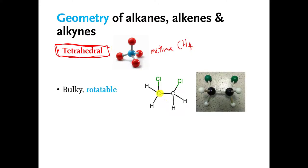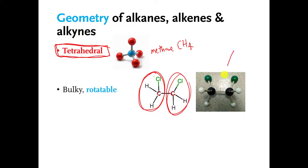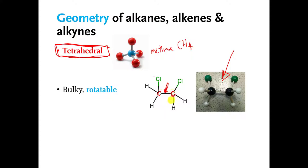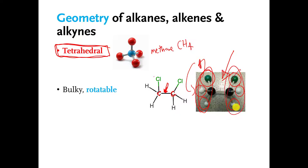If you have two carbons connected to each other, and there are three things sticking onto each carbon, the shape is going to look something like this. The point I want to make is that if you have a single covalent bond between the carbons, then these atoms over here and these atoms over here can rotate around like a propeller relative to each other — they can just spin around relative to each other.